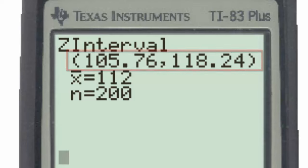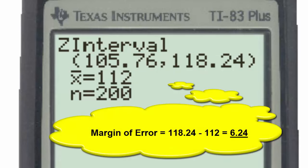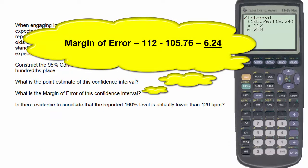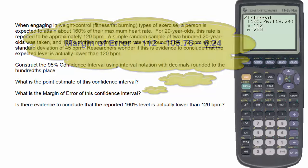The margin of error can be calculated by simply subtracting 112, which is in the middle of this interval, from the upper bound of this interval, which is 118.24, giving 6.24. Had we subtracted 105.76 from 112, we would also arrive at the margin of error of 6.24.